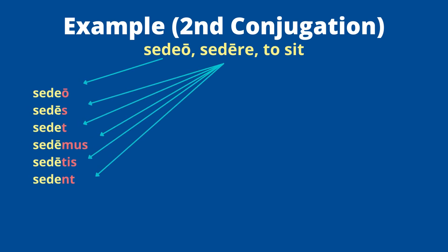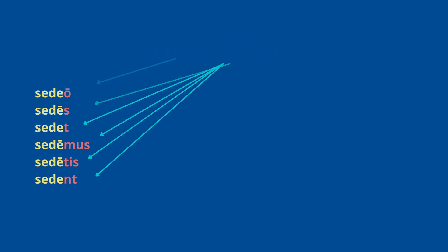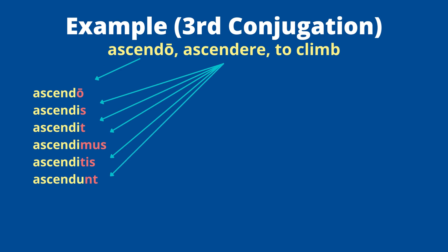For second conjugation: 'sedeo, sedere,' meaning 'to sit.' The infinitive has a long 'e-re,' making it second conjugation. 'Sedeo' means 'I sit' or 'I am sitting.' For the rest, take the infinitive, drop '-re,' stem is 'sede.' Add endings: sedes, sedet, sedemus, sedetis, sedent. Very straightforward — no vowel flips needed.